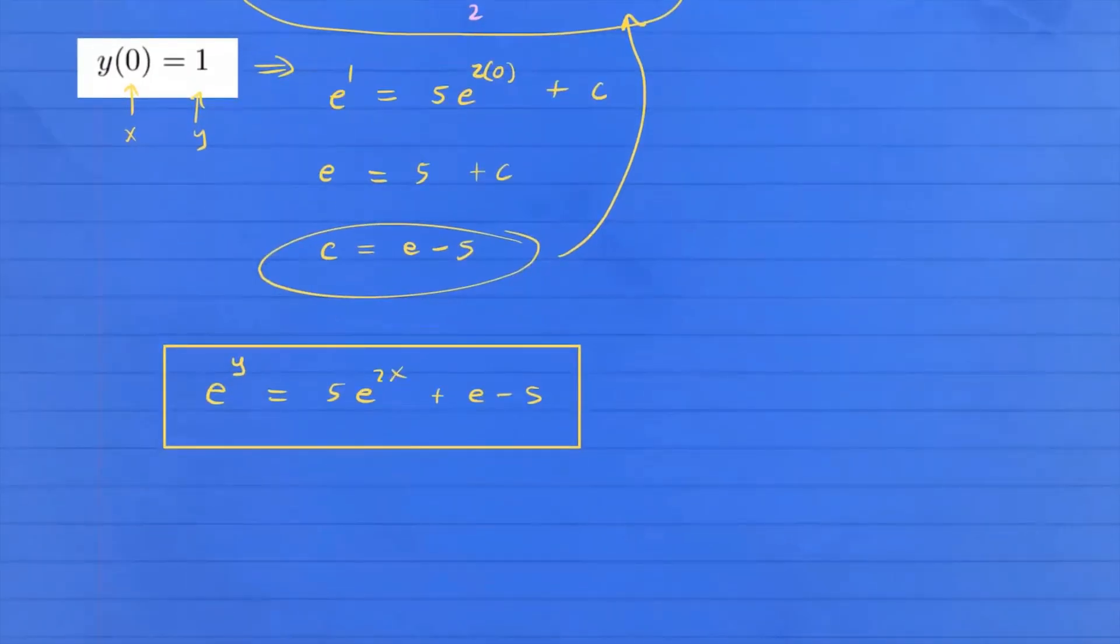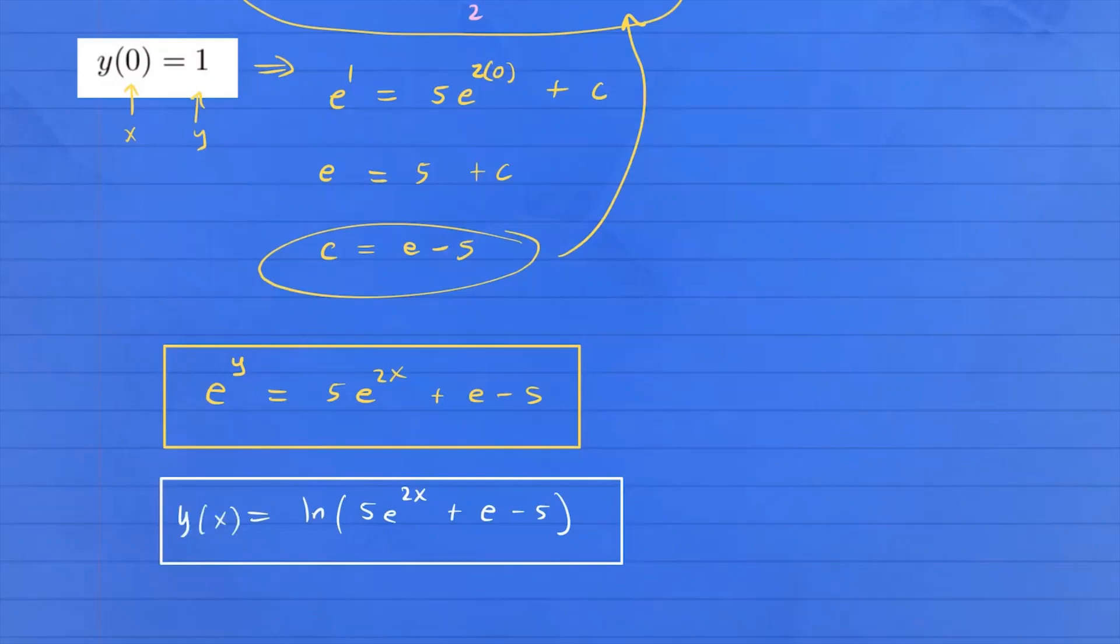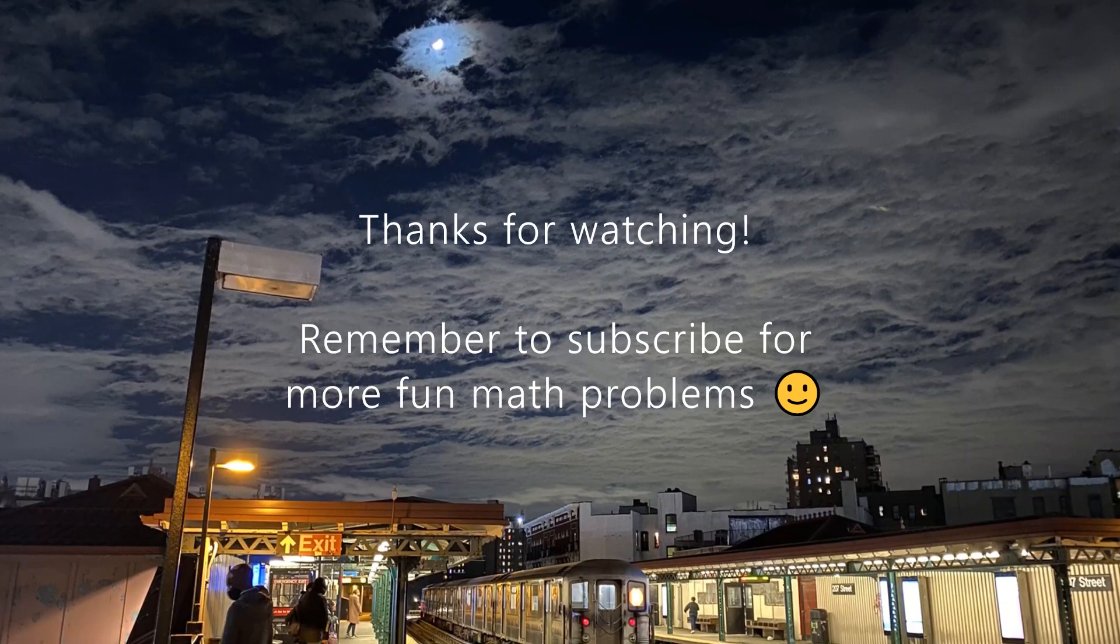This is one way to write the answer, but let's solve for the explicit solution by solving for y. To solve for y, take the natural log on both sides. On the left-hand side you have y, and on the right-hand side you have ln of (5e^(2x) + e - 5). There you have your solution explicitly written, or you can write y as a function of x.